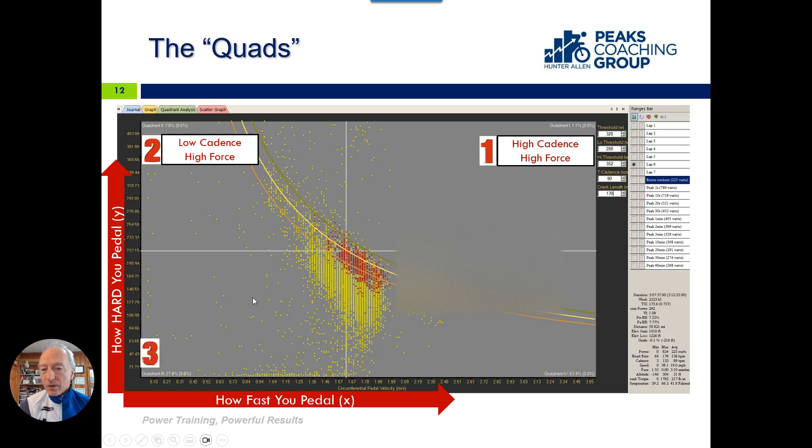Quadrant number three is down here. This is where you're out riding an endurance ride—your coffee shop ride, your active recovery rides. You're not pedaling hard, you're not pedaling fast in quadrant three.